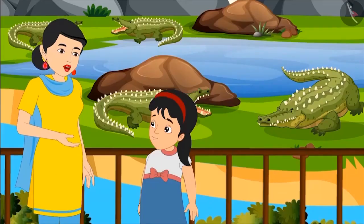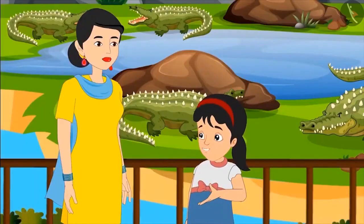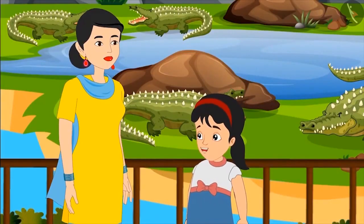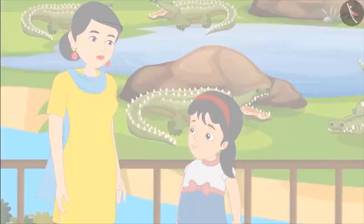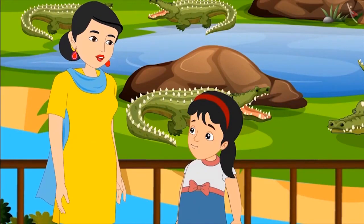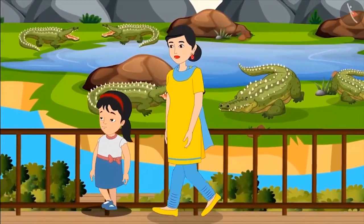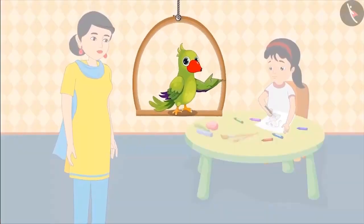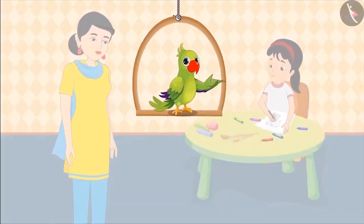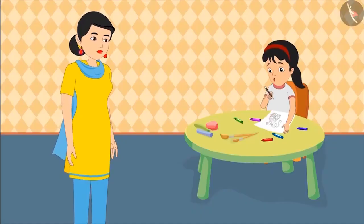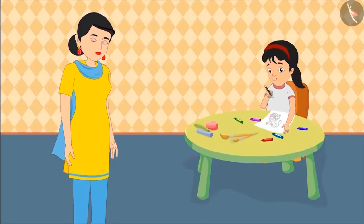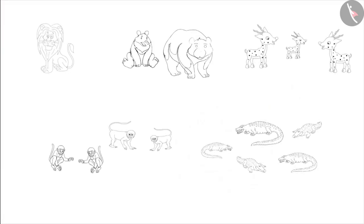Absolutely correct. Very nice, Pinky. How different and colourful all these animals are. After going home, I will draw a picture of them. Okay, my dear. Let's go home then. Pinky then goes home and draws pictures of all the animals. Look, Mom. How are these drawings? Wow, Pinky. You have made very good drawings. Come on, now make a group of one type of animals and give each group a name.